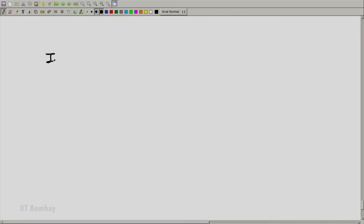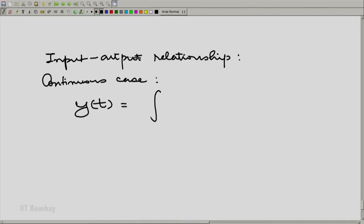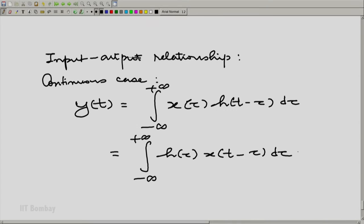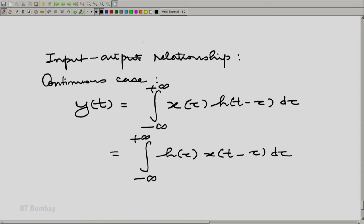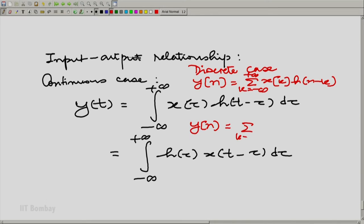Let us once again put down the input-output relationship. For the continuous case, we have two relationships here. We can use either of the relationships, using commutativity, whichever is convenient can be used. Let me write down the discrete case also. I will write it on the same page to make it easier in a different color for the discrete case.